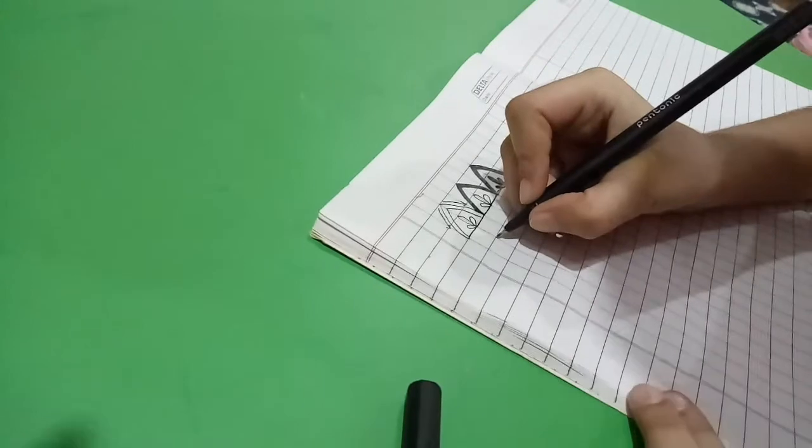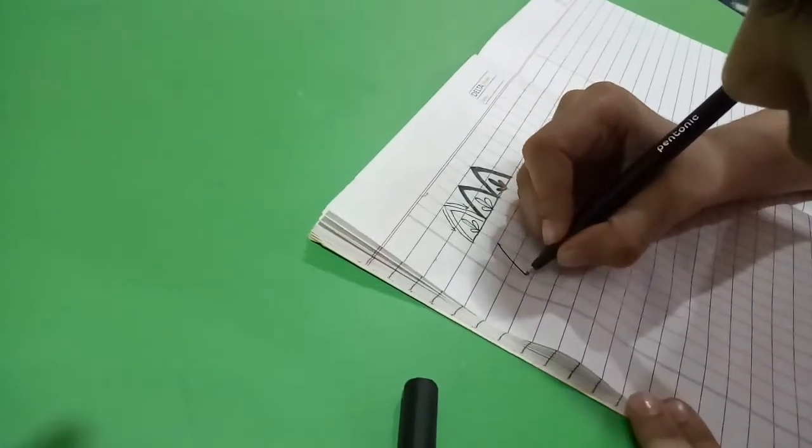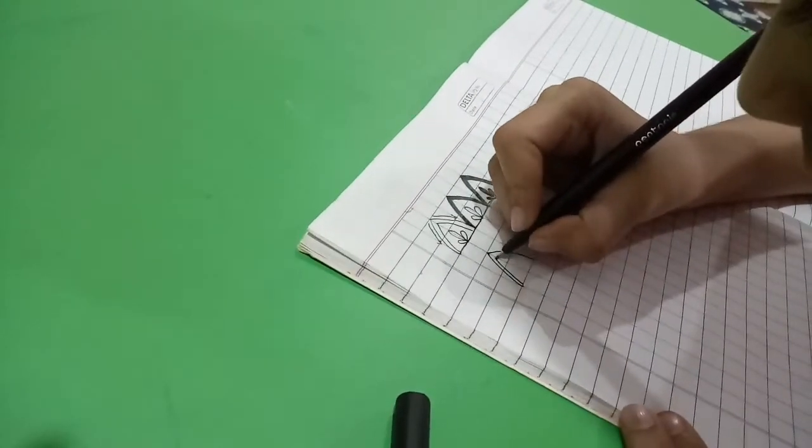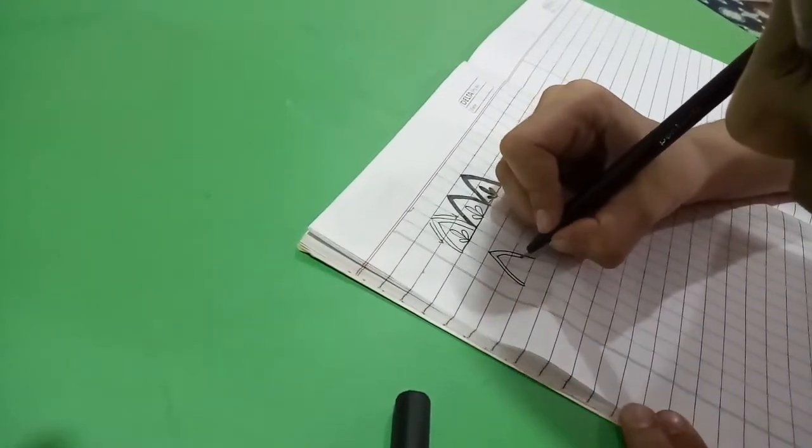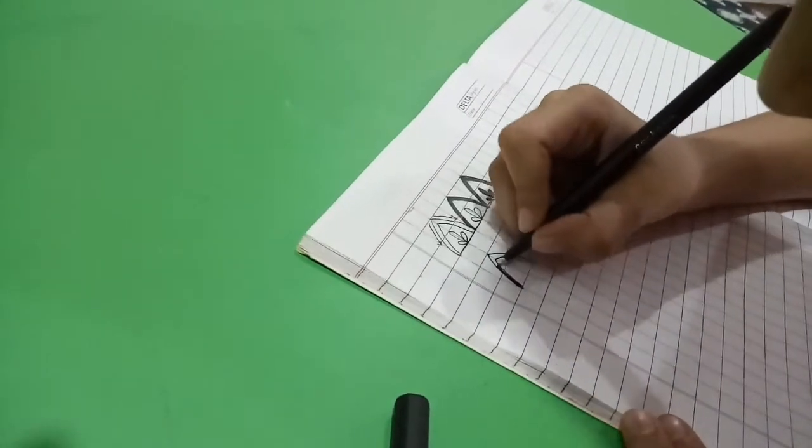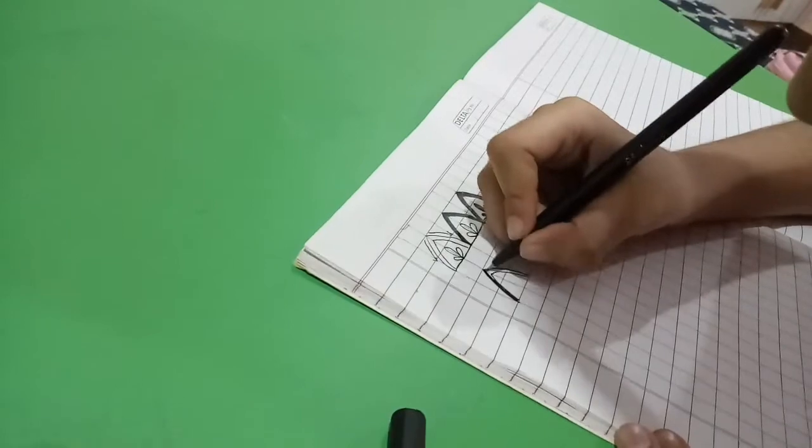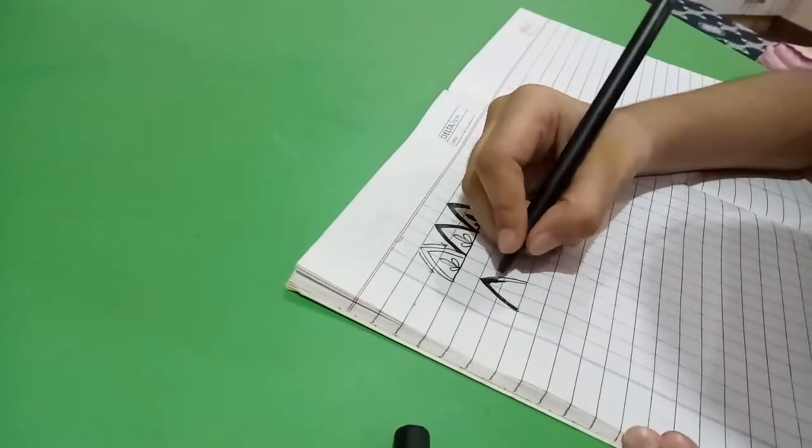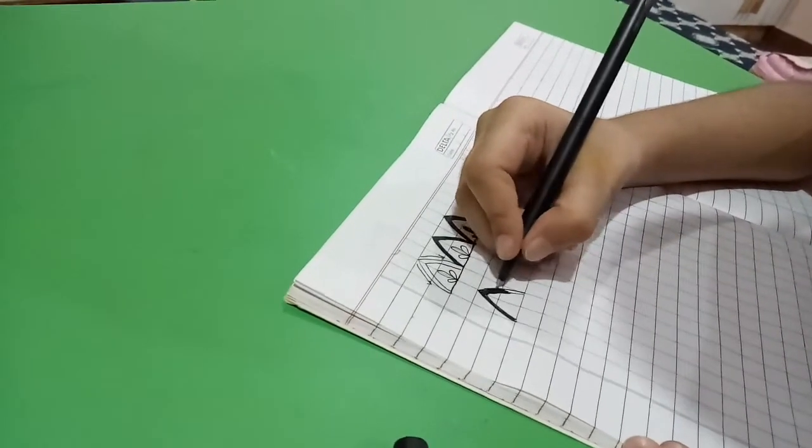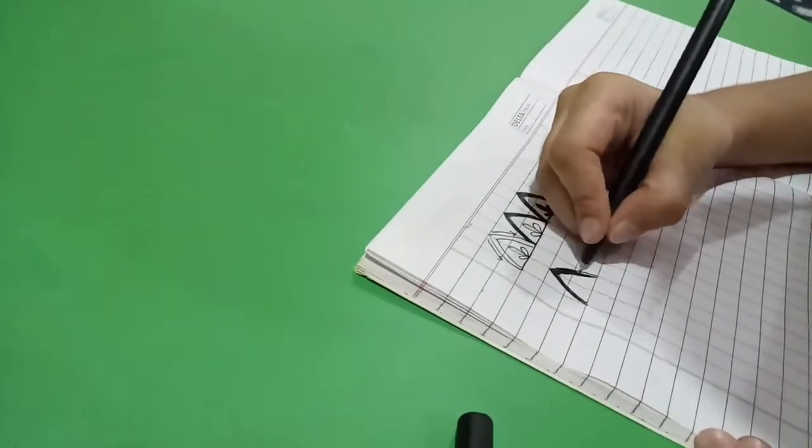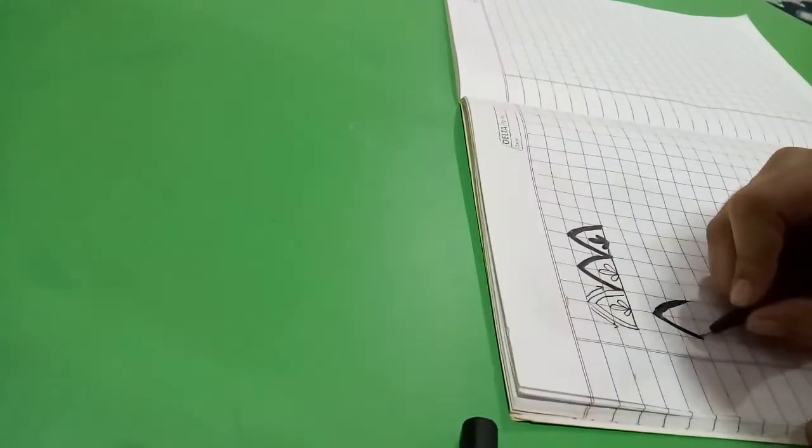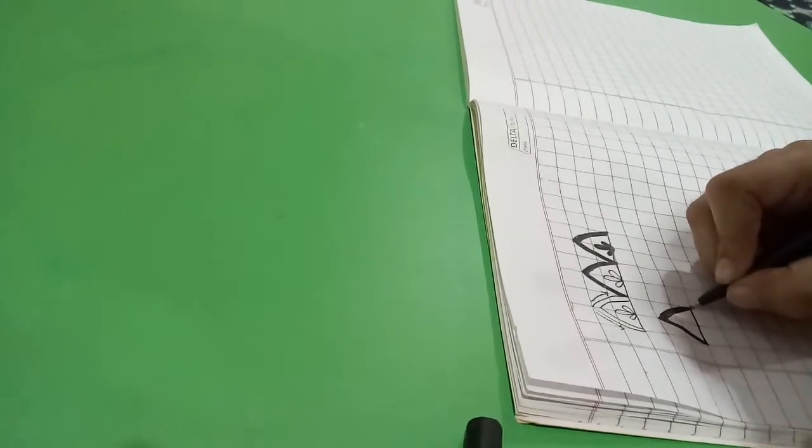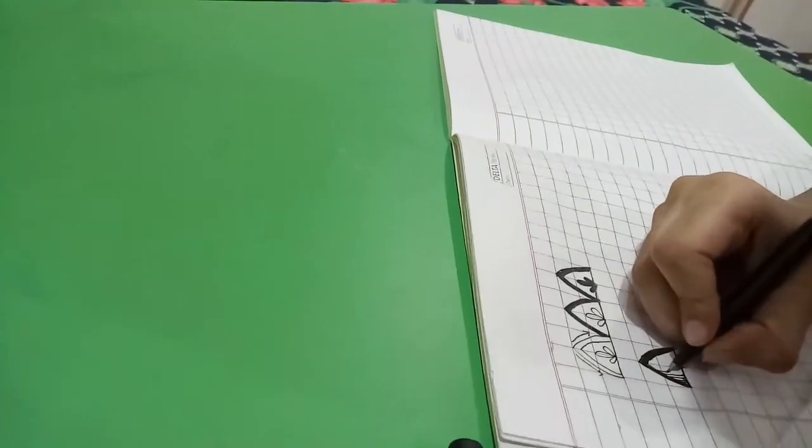First we are going to draw like this, and like this, one more time, and one more. Now I'm going to fill it up. I am making a line, now adding lines over here like this.